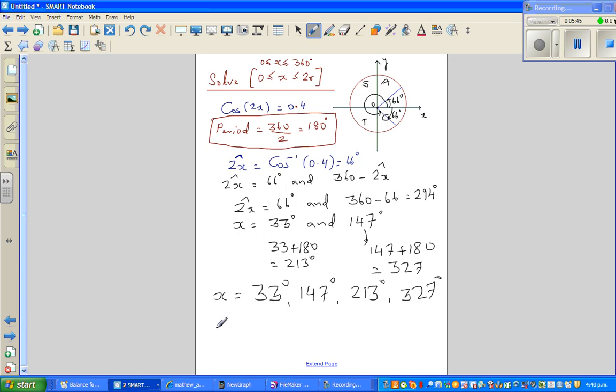And finally, if you want to change this into radians or pi, this is nothing but 33π over 180. This is 147π over 180. You can see in my previous videos how I changed this into radians. So this is in radians. The next is 213π over 180. And finally 327π over 180. So let's check this on a calculator.